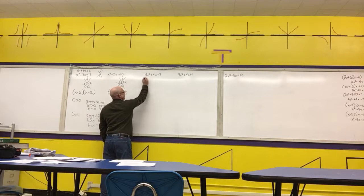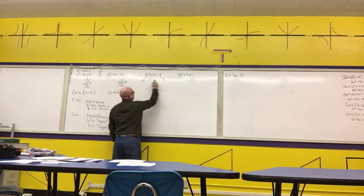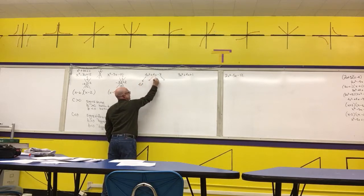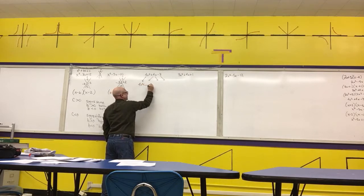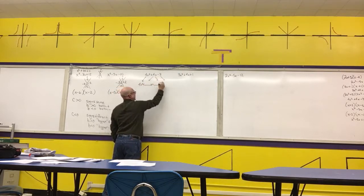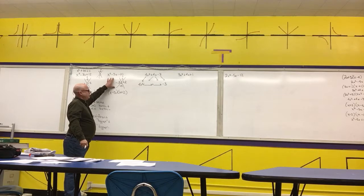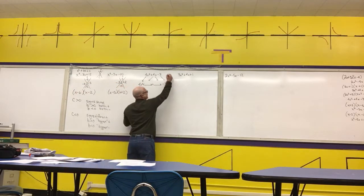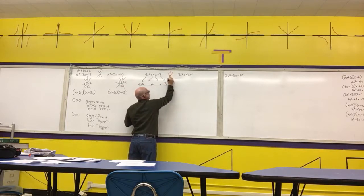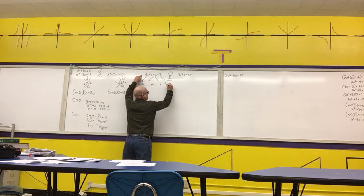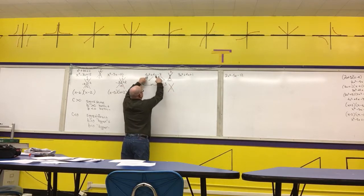For factoring by grouping, we copy the first term, then split the middle term into two terms — putting plus blank x plus blank x — then copy the last term. We find numbers to fill in the blanks the same way as before, except this time the two numbers must add to b and multiply to a times c. In this case, we need two numbers that multiply to negative 12 and add to 4.